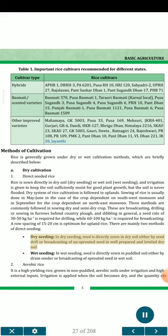There are mainly two methods of direct seeding. In dry seeding, seed is directly sown in dry soil either by seed drill or broadcasting of unsprouted seed in well-prepared and level dry soil. In wet seeding, seed is directly sown in puddled soil either by drum seeder or broadcasting of sprouted seed in wet soil.